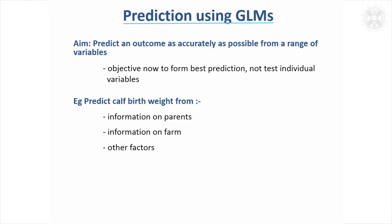So if we were predicting calf birth weight, whereas in a multiple regression model we'd have to put only continuous measurements in, now we can use categorical measurements, binary variables, information about the farm — this type of farm, that type of farm. You can bring in groupings into the prediction as well, making it even more useful than multiple regression.